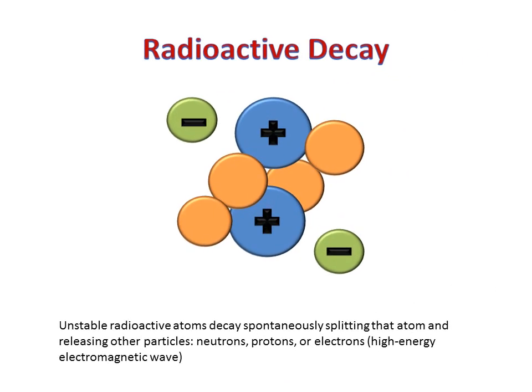When radioactive atoms become unstable, they tend to spontaneously decay. During this process, the atom splits and particles such as neutrons, protons, and electrons are released in various forms.